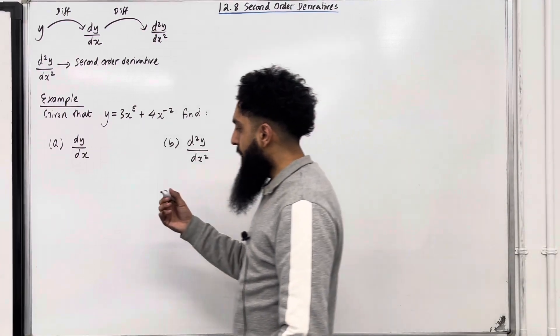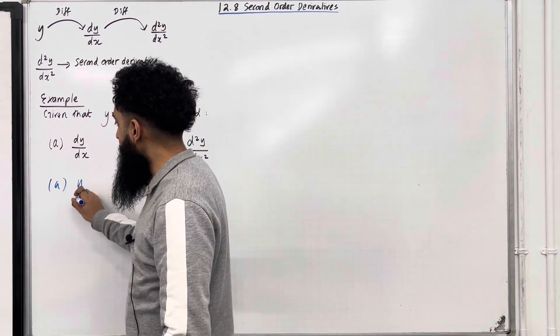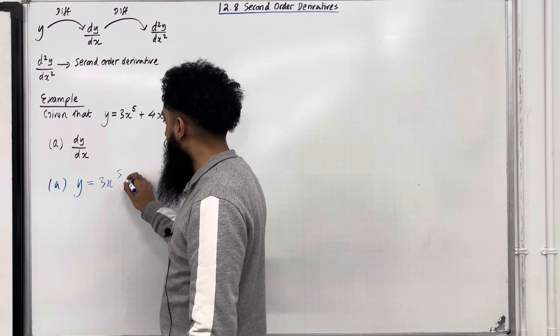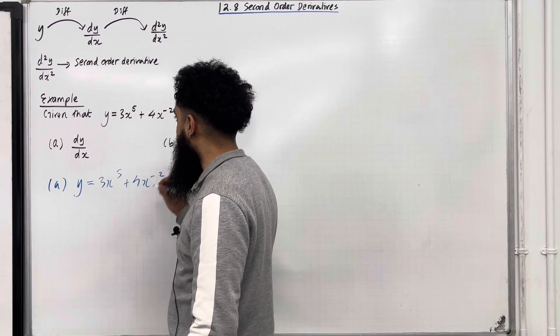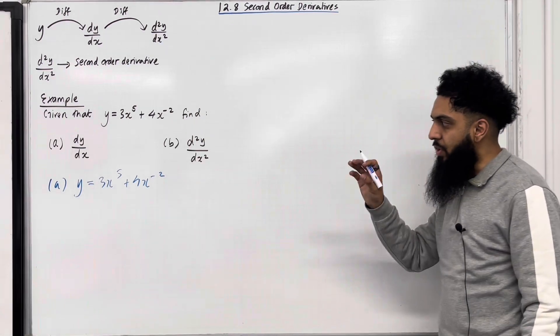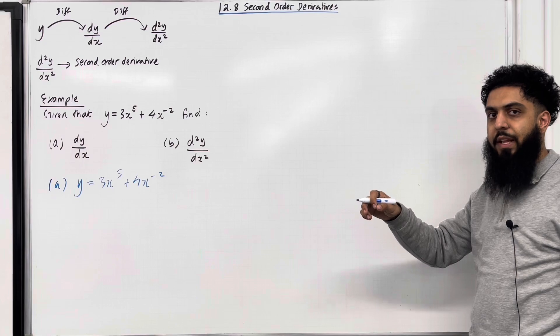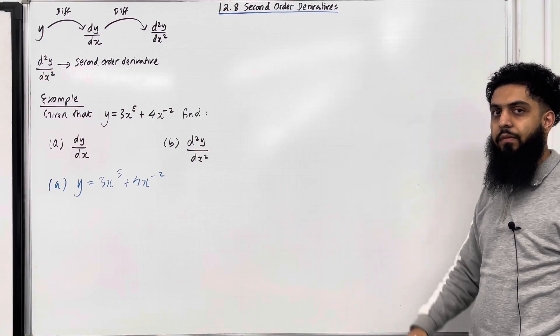Now in part A, we are going to start off with the y equation. So we've got y equals 3x to the power 5 plus 4x to the power minus 2. I'm going to do term by term differentiation. Bring down the power, multiply it by the coefficient, and then subtract 1 from the power.